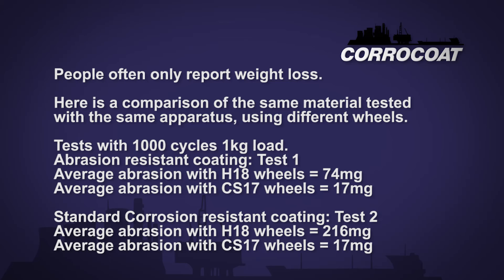Here is a comparison using two different wheel types on the same material. Material 1: H18 wheels with a thousand cycles, one kilo load. Material 2: H18 wheels with a thousand cycles, one kilo load. Material 1: CS17 wheels with a thousand cycles, one kilo load. It is obvious that there is something wrong with the second set of tests — the result is the same on two substantially different materials, whereas in the first set of test results the results are significantly different. This is probably due to wheel clogging in the second set of tests.